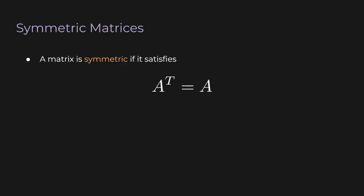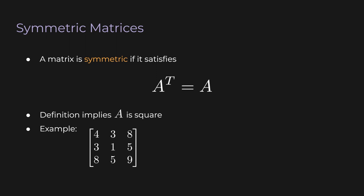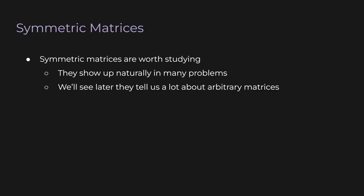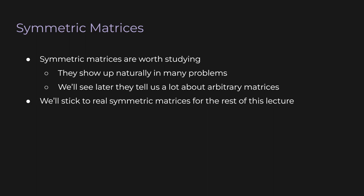Let's move on to symmetric matrices. A matrix is symmetric if the transpose of the matrix is the same as the matrix itself — you transpose the matrix and get the same matrix back. This implies A must be square. In a concrete example, elements on opposite sides of the main diagonal are equal, while elements along the main diagonal can be anything. Imagine the main diagonal cuts the matrix in half, and each half is a reflection of the other. Symmetric matrices show up naturally in many problems, and we'll see later they tell us a lot about arbitrary matrices.